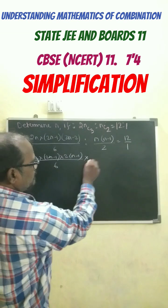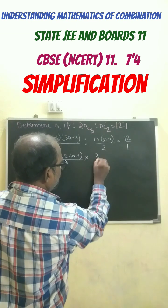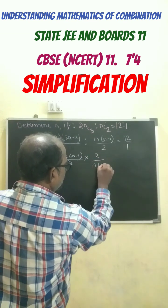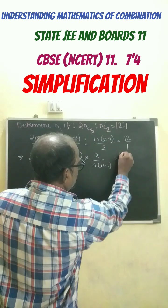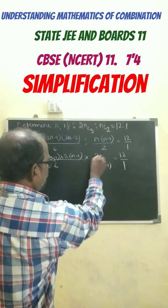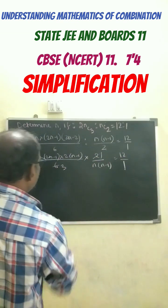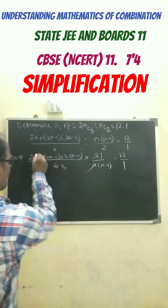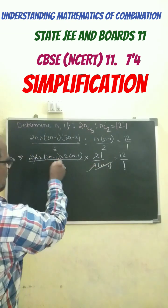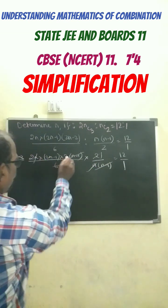Putting into here, just reciprocal it: 2 by n into n-1 equals to 12 by 1. So we get here 2 ones, 2 threes are 6, n gets cancelled here, n minus 1 gets cancelled here. So 2 into 2, 4.